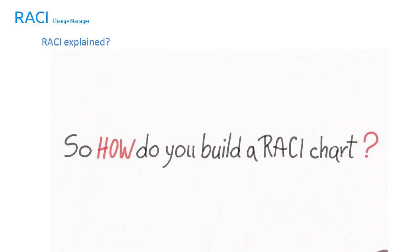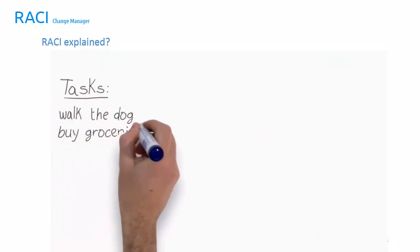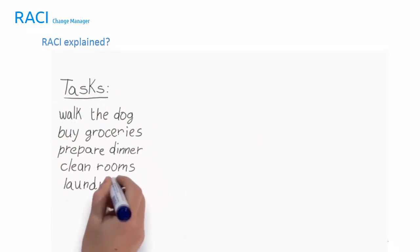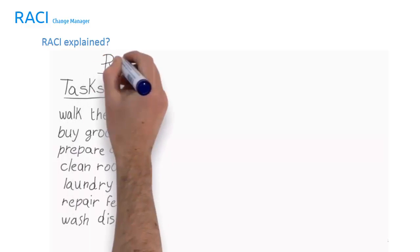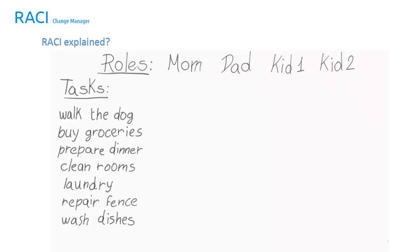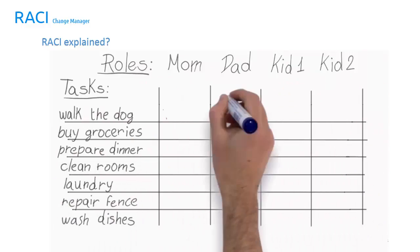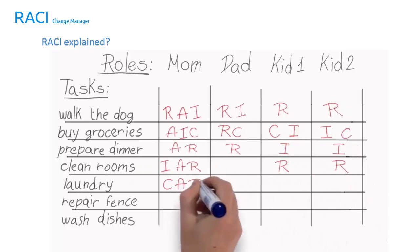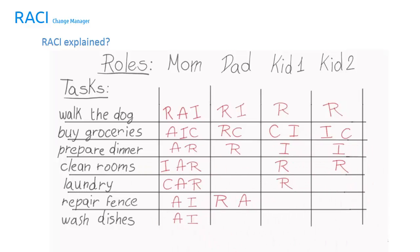So how do you build a RACI chart? First, identify all the required tasks and activities. Then identify the roles — who should be performing all of these tasks. Then assign the RACI codes: who will be responsible, accountable, consulted, and who will be informed. Of course, this is a collaborative process. Then identify where the gaps or overlaps are. You can only have one A per task. Maybe you don't have any R's for a task, or too many R's, C's, and I's, meaning so many people are involved that the task may never be completed.